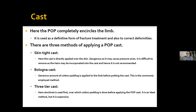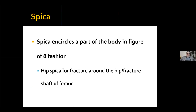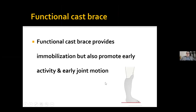Coming to cast: POP completely encircles the limb. It is used as a definitive form of fracture treatment and can correct deformities. Three methods: skin-tight cast (same as unpadded), Bologna cast (generous cotton padding applied before putting cast — most commonly used), three-tiered cast (stockinette first, then cotton padding, then POP — ideal but more expensive due to stockinette). Spica encircles a part of the body in a figure-of-eight fashion, for example hip spica for hip fractures and femur shaft fractures in children. Functional cast brace provides immobilization but also promotes early activity and joint motion.